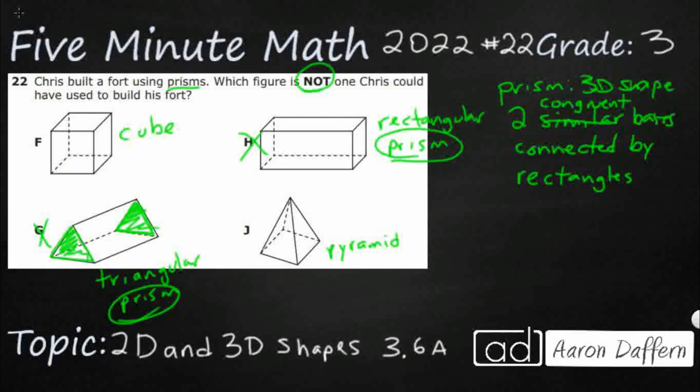And look, they're connected with here's a rectangle, there's a rectangle, and then there's a rectangle. Same thing with this. This rectangular prism actually has two, looks like two square bases, but it could be two rectangle bases. Doesn't really matter. And then, it's connected by four different rectangles. The top, the bottom, the front one, and then the back one.